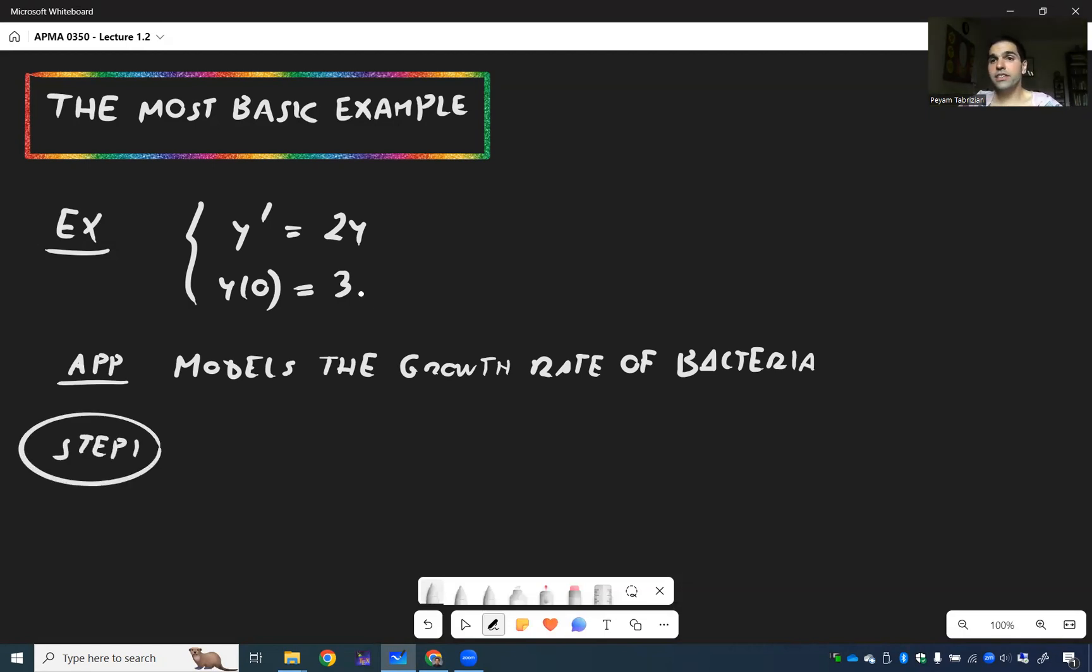So the first thing is to put everything on the left side. So if you have y prime equals 2y, we can divide by y, and we get 2.